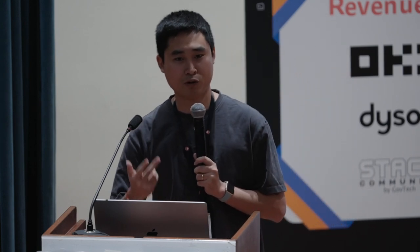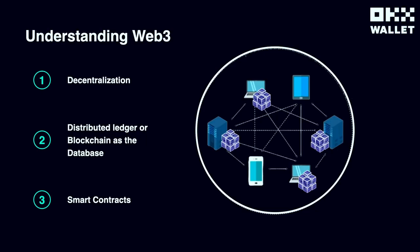We have the server already and the database already — so what about the program running on Web3? This is where the smart contract plays its role. A smart contract is a self-executing program running on the blockchain that helps us automate processes for agreements without a third party.